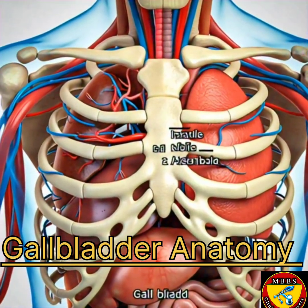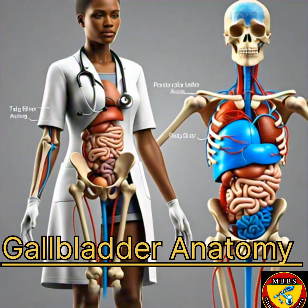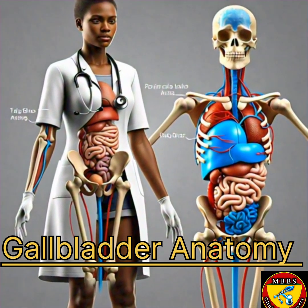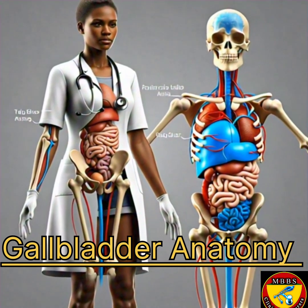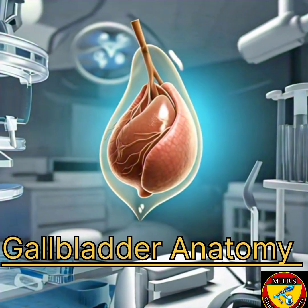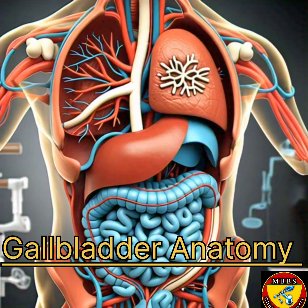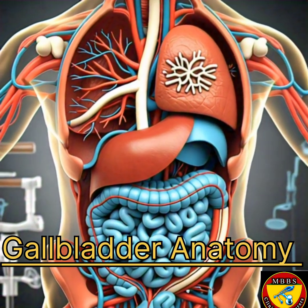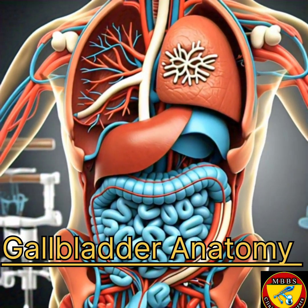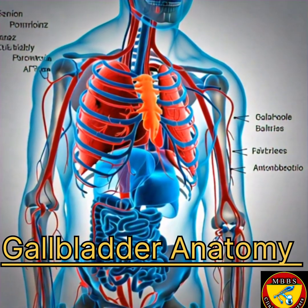The gallbladder receives its blood supply from the cystic artery, a branch of the right hepatic artery, which arises from the hepatic artery proper. Venous drainage is via the cystic veins, which drain into the hepatic portal vein.